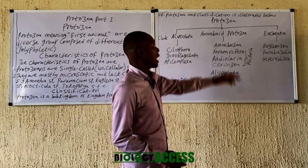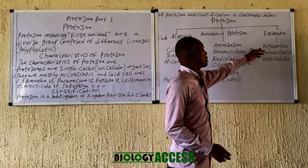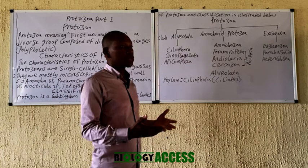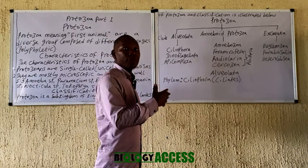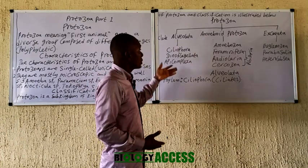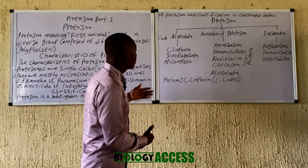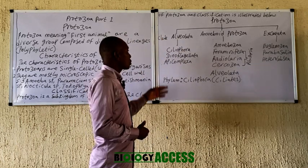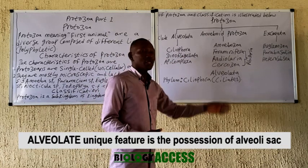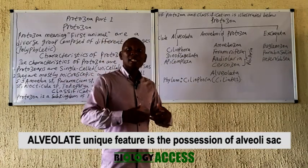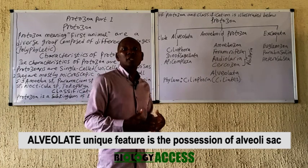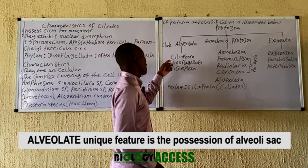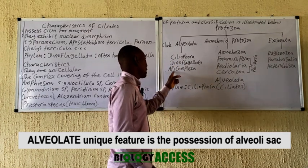The last clad is the Excavata, which comprises the Kinetoplastea, Parabasalia, and others. Note that this classification is from recent literature — taxonomy and classification is an evolving field. The Alveolates are a group of protozoa characterized by the possession of alveolar sacs beneath the outer membrane. The clad Alveolata comprises the phylum Ciliophora, Dinoflagellata, and Apicomplexa.